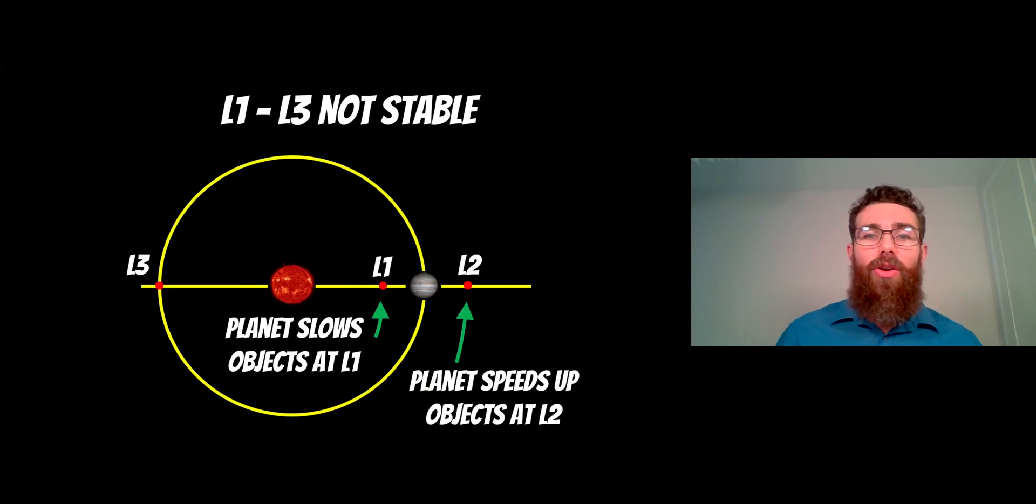The first three are not classified as being stable. So what that means is if you've got an object at one of those points—L1, L2 or L3—if it moves slightly away from that point, it very quickly moves away. It won't necessarily come back again. So they're very unstable in that sense. We do put spacecraft there and they require less energy than they would require to orbit at any normal orbit.